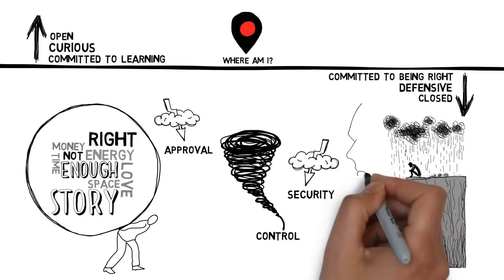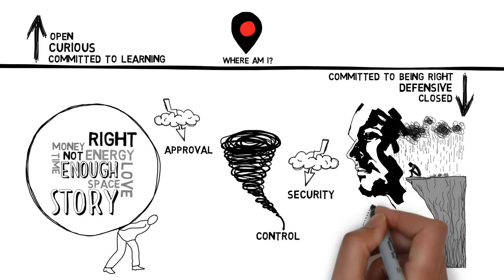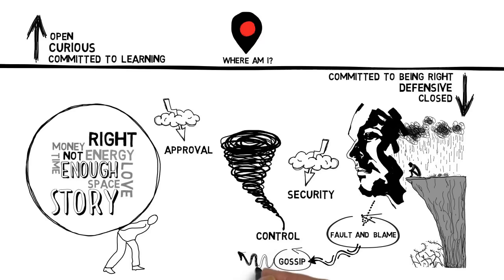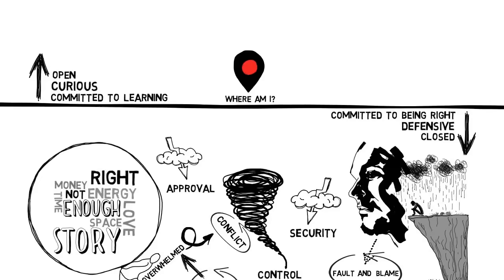The deeper below the line they are, the more serious things look. People below the line tend to behave certain ways as well. They tend to cling to an opinion, find fault and blame, gossip, explain, rationalize and justify, get overwhelmed, and avoid conflict or pursue conflict for the sake of winning.